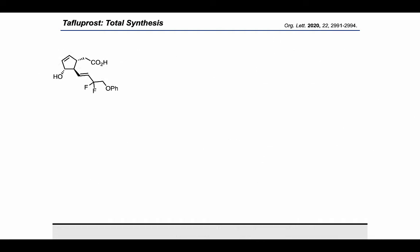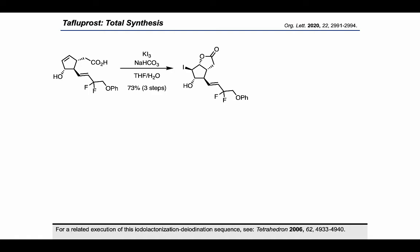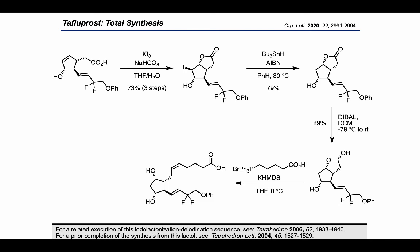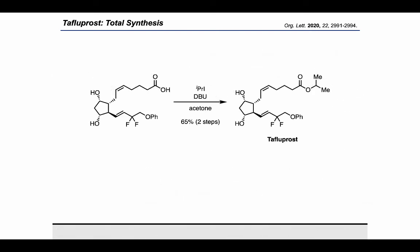Now they were able to use the pendant carboxylic acid to execute a nice ring-closing tactic. First, they carried out an iodolactonization to arrive at this cyclized product. Then they used a radical deiodination with tributyltin hydride and AIBN. To open the lactone and complete the synthesis, they used DIBAL to reduce the lactone to the lactol, which could then be used as a substrate for a Z-selective Wittig reaction. Finally, treatment with isopropyl iodide and DBU allowed the installation of the isopropyl ether and the completion of the synthesis of Tafloprost.